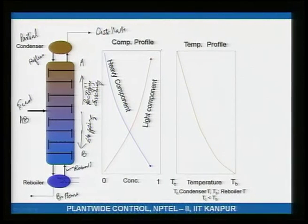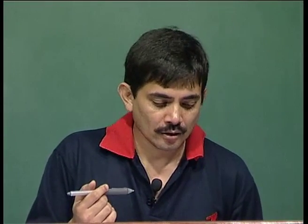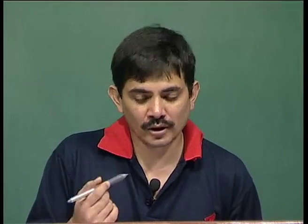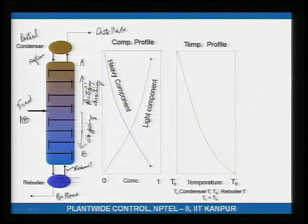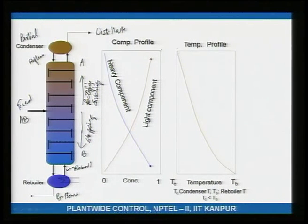Regarding the temperature profile: each tray is at its bubble point — it is boiling. Since A boils at a lower temperature and B at a higher temperature, the top of the column is the coldest place and the bottom is the hottest. In between, there is a typically monotonic rise in temperature as you go down the column.